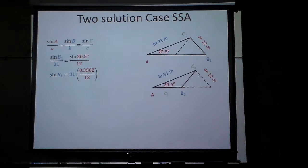I end up getting 0.3502 over 12 times 31. And then I do second sine of that 0.9047 and I get 64.8. So I know B1 is 64.8.